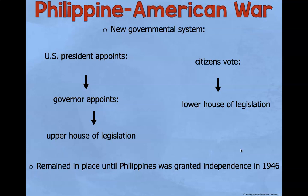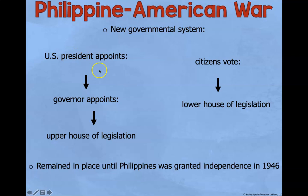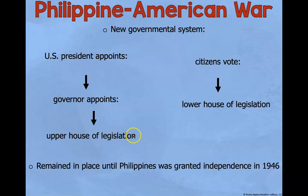After the Philippine-American War, they created a new government system in the Philippines. The United States president would appoint a governor, who would then appoint an upper house of legislation. Citizens would vote for a lower house of legislation — similar to what happened during the 13 colonies when controlled by Great Britain. This remained in place until the Philippines was granted independence in 1946.